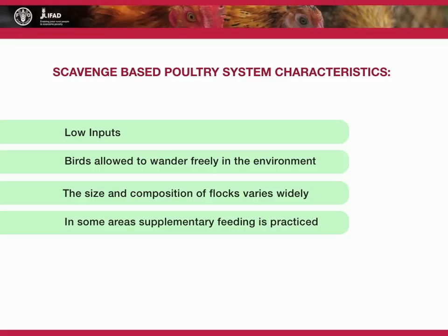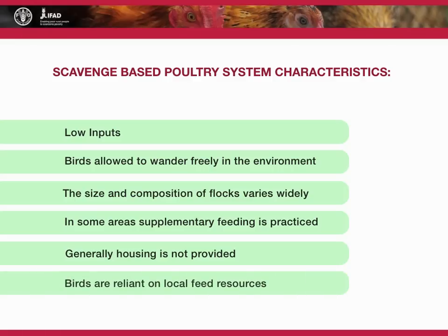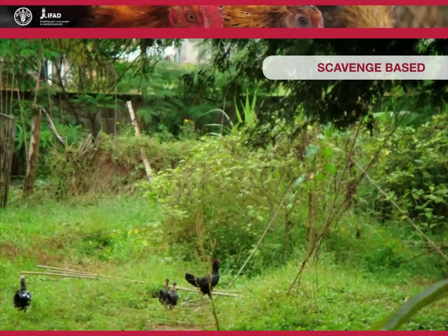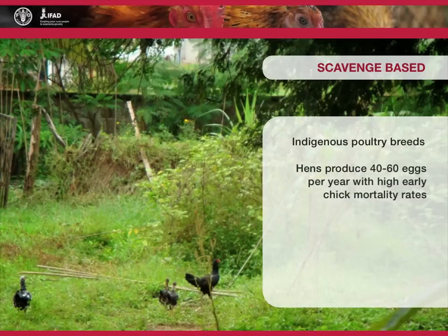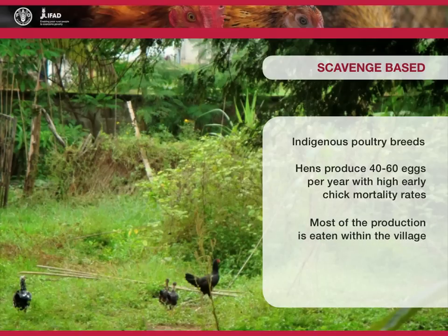However, supplementary feeding is not widespread, and in areas where it is practiced, it is often subject to seasonal availability of surplus grain. Generally, housing is not provided, but birds may be housed in the family dwelling at night or encouraged to roost in trees near the homestead. One characteristic of scavenge-based production is that birds are reliant on local feed resources. These systems generally use indigenous poultry breeds, with hens producing 40 to 60 eggs per year and high early chick mortality rates. Most of the production is eaten within the village, and flock size is dependent on the feed resource base.